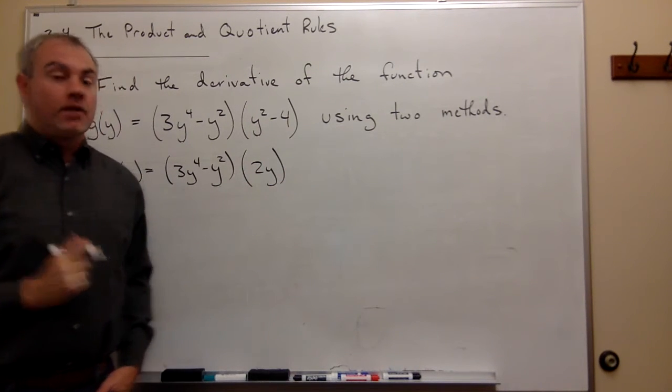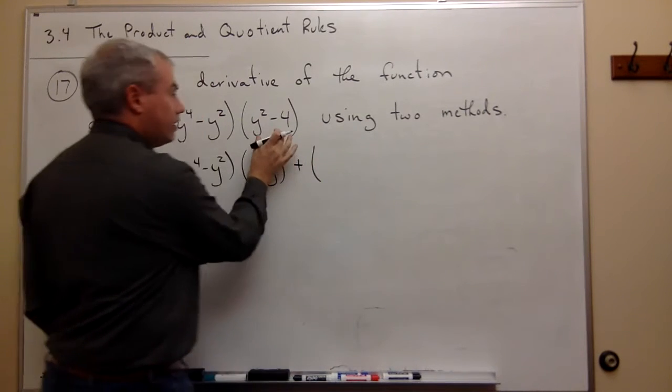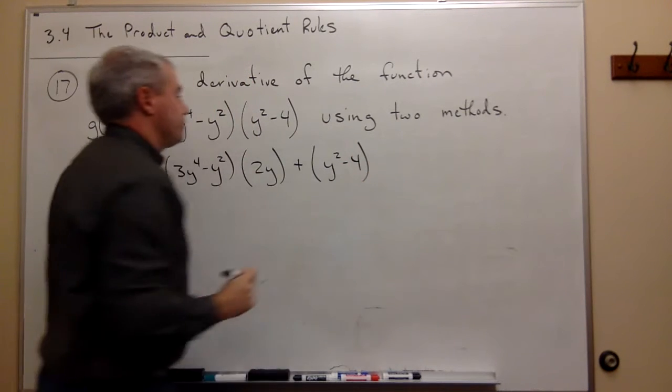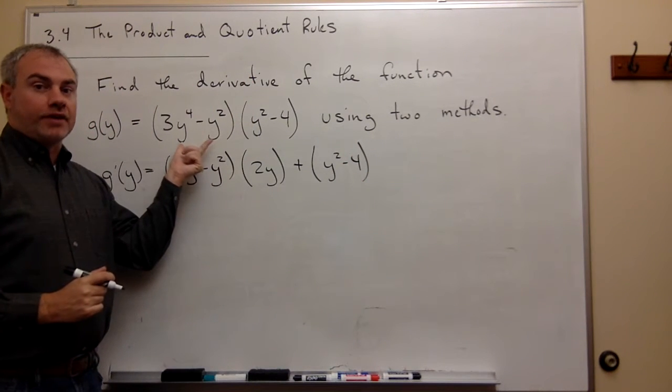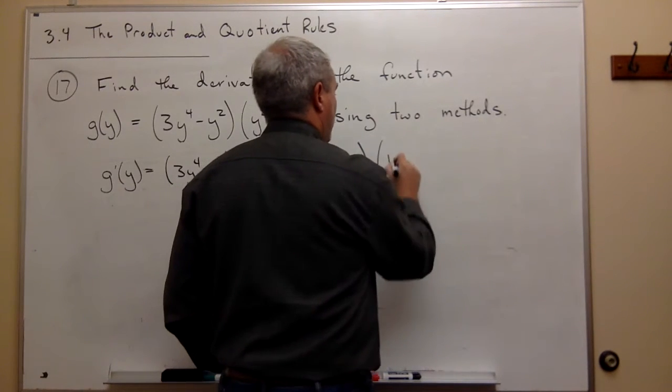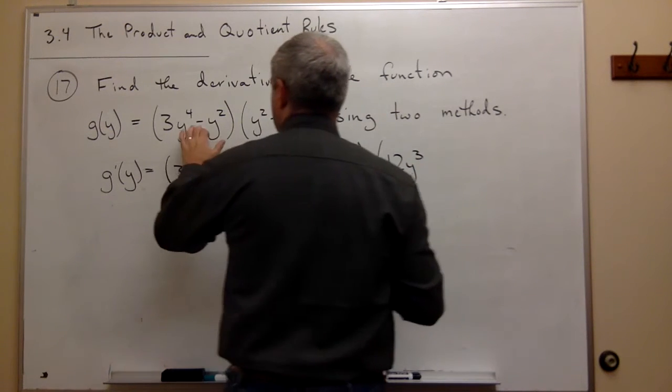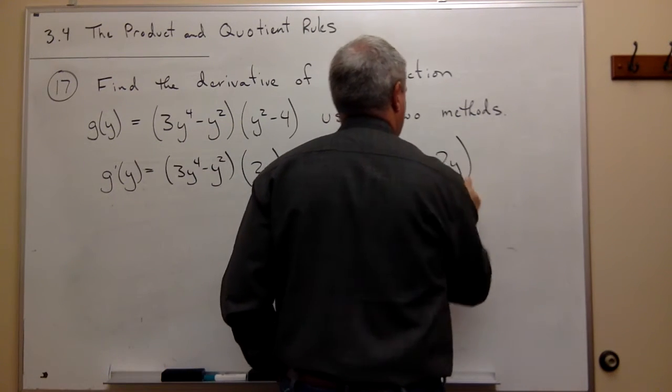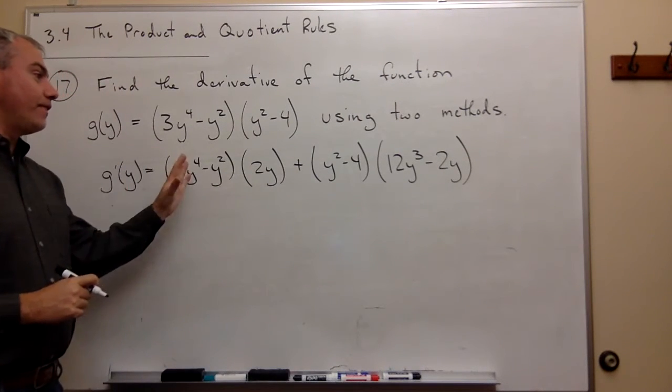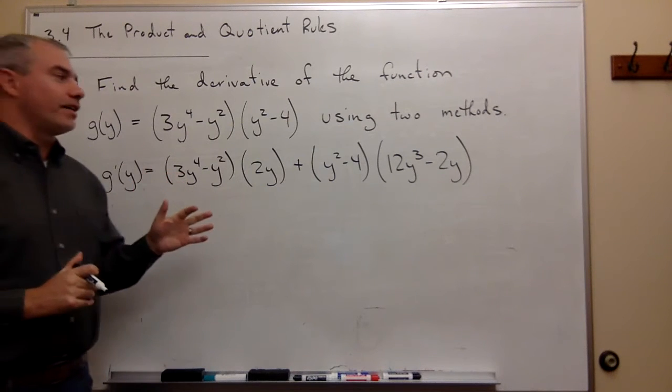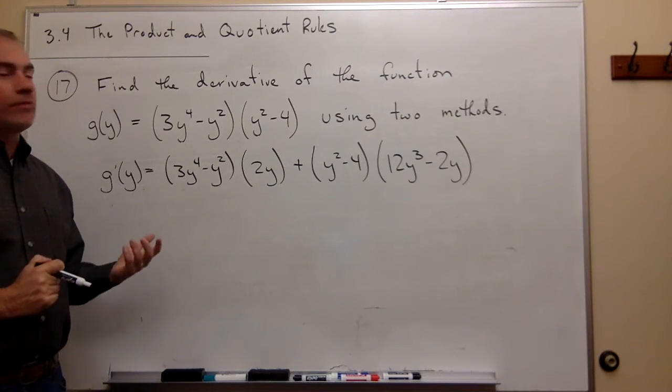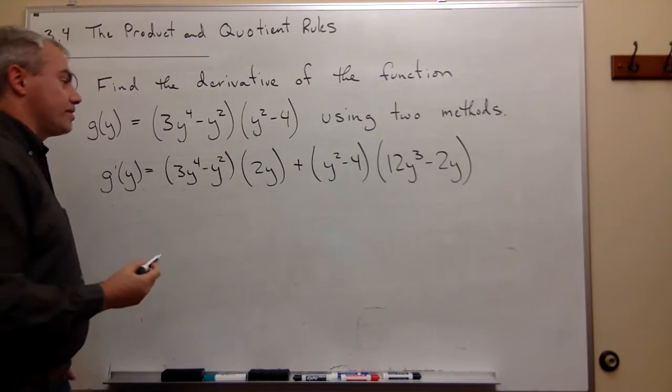Okay, plus the second one left alone, (y^2 - 4) times the derivative of the first one. And the derivative of the first one is 12y^3 - 2y. Okay, so we have this, and it could be simplified a little bit, and maybe it's worth it because at the end of the day, I'd really like to say that these two methods are the same. So let's go ahead and simplify this a little bit.